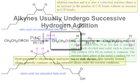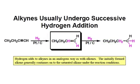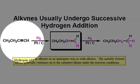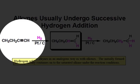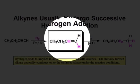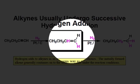Turning our attention to hydrogenation of our alkyne molecule, this reaction is very similar to the hydrogenation we just saw for an alkene. Our first step involves hydrogenation of our triple bond, and what occurs is we lose one pi bond in this hydrogenation reaction to generate this alkene.